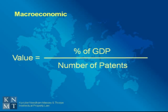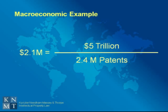In the macroeconomic method, you assume that a certain portion of the country's GDP, like maybe a third, is attributable to patents. And then you divide that number by the total number of patents that are still issued and valid. So in the case of assuming $5 trillion for the value of patents in the economy and 2.4 million patents, it gives every patent a value of $2.1 million.